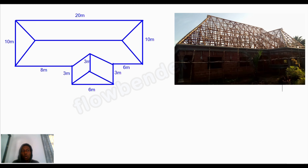The next thing is to take the measurement of the ridge curve. Most of the time we use 1.1 or 1 meter spacing for the rafter. This is the beginning of the ridge curve and this is the end of the top ridge. You count the spacing between the rafters: one, two, three, four, five, six, seven, eight, nine, ten — then multiply by 1.1 meters, giving you 11.1 meters for the top ridge.